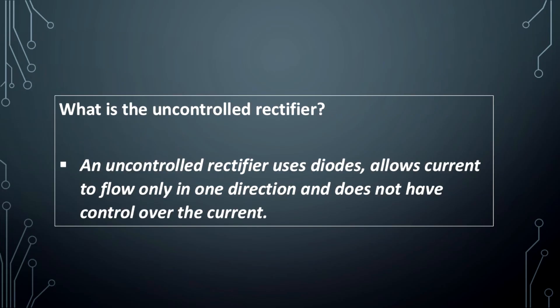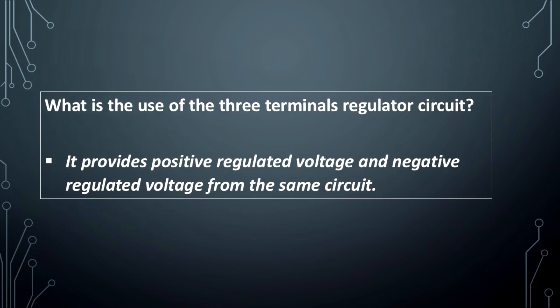What is the uncontrolled rectifier? An uncontrolled rectifier uses diodes, allows current to flow only in one direction, and does not have control over the current. What is the use of the three-terminal regulator circuit? It provides both positive regulator voltage and negative regulator voltage from the same circuit.